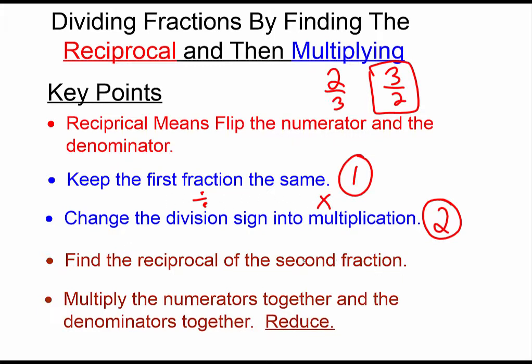And the third step is find the reciprocal of the second fraction, the second one only, and then multiply the numerators together and the denominators together, reduce, and you've got your answer. Let's see what that looks like in practice.